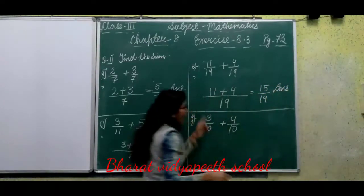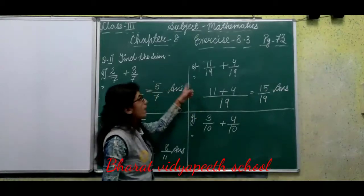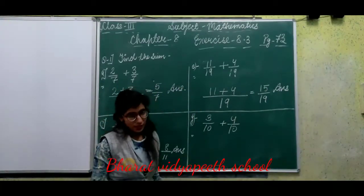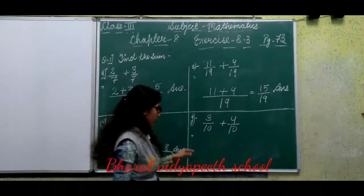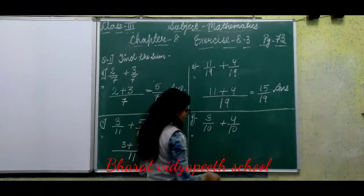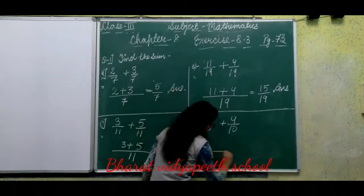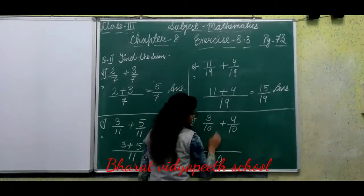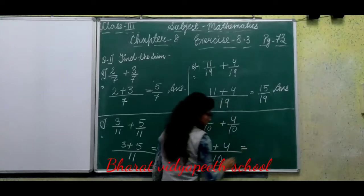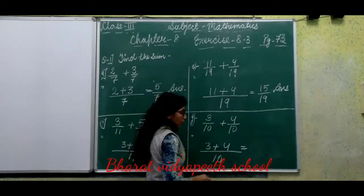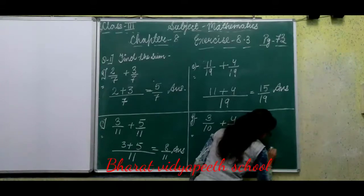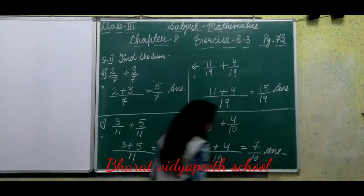For like fractions, we add the numerators and keep the denominator as it is. Now Part G: 3 upon 10 plus 4 upon 10. Denominator 10 is the same. So 3 plus 4 equals 7. Answer is 7 upon 10. Clear, third class.